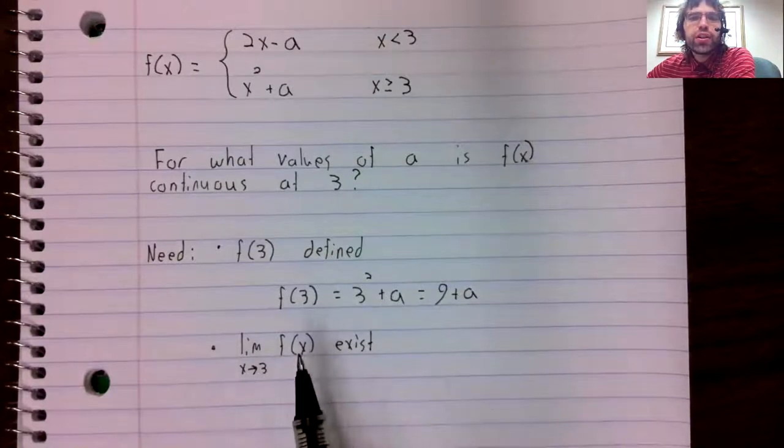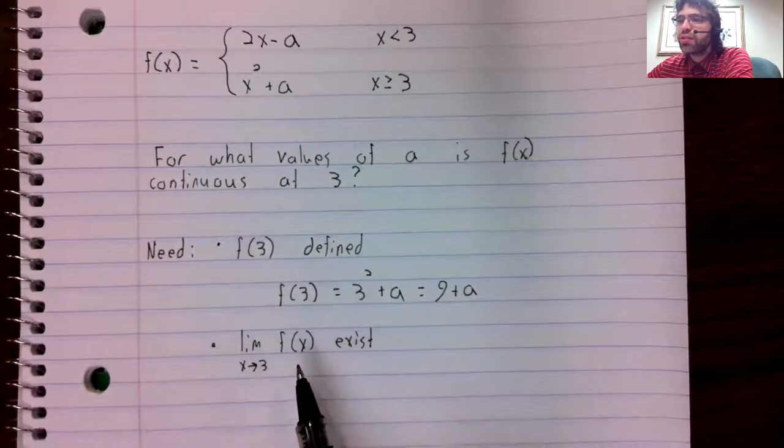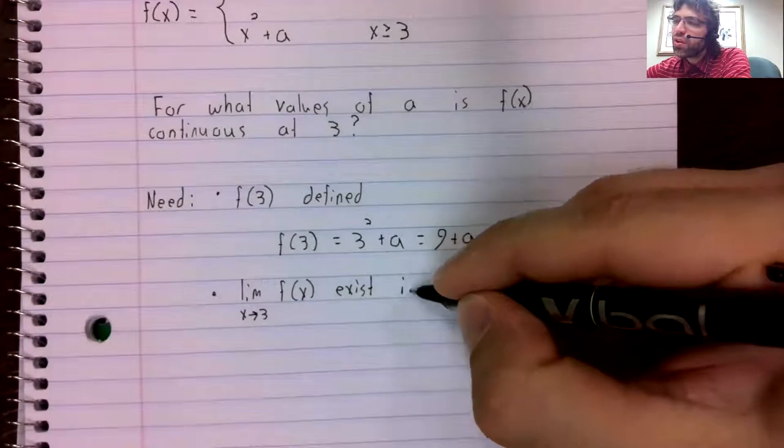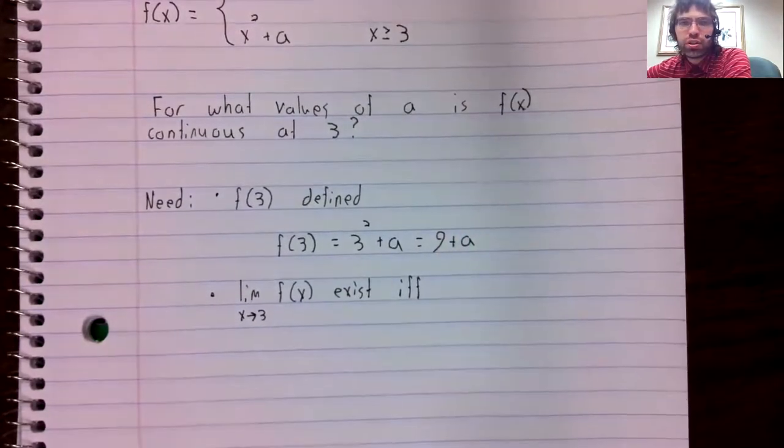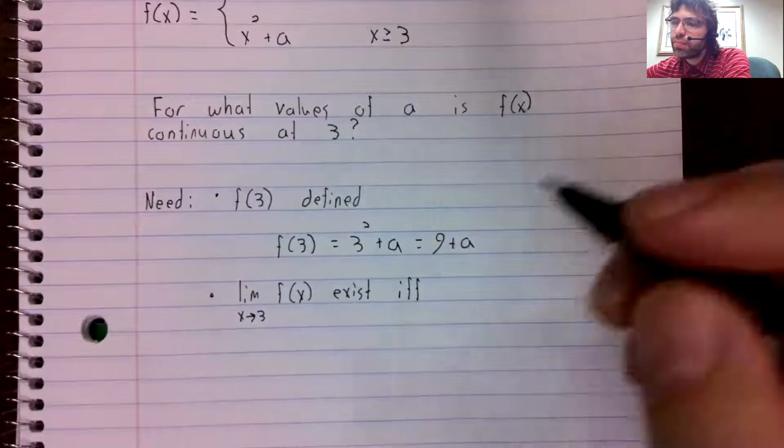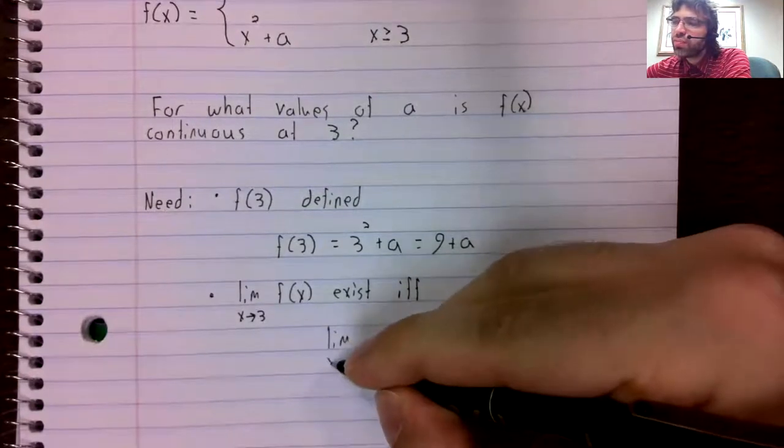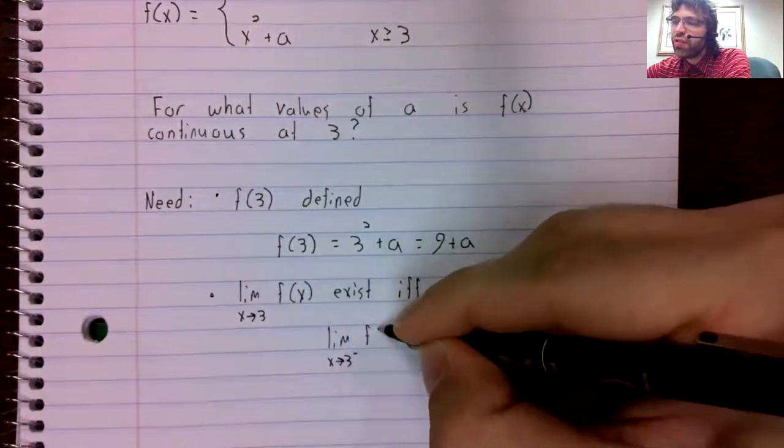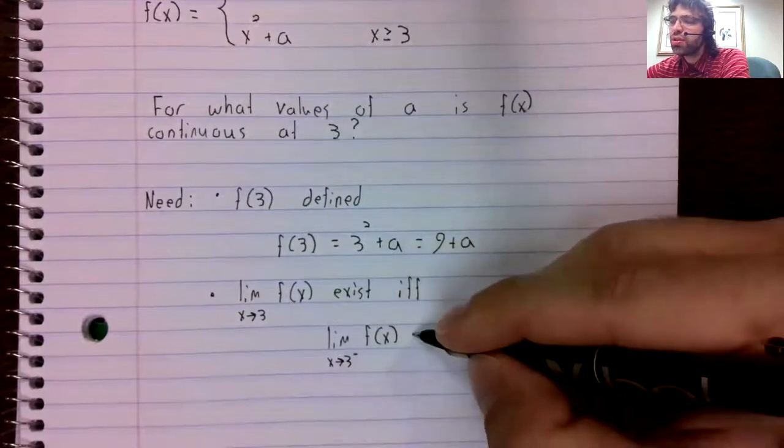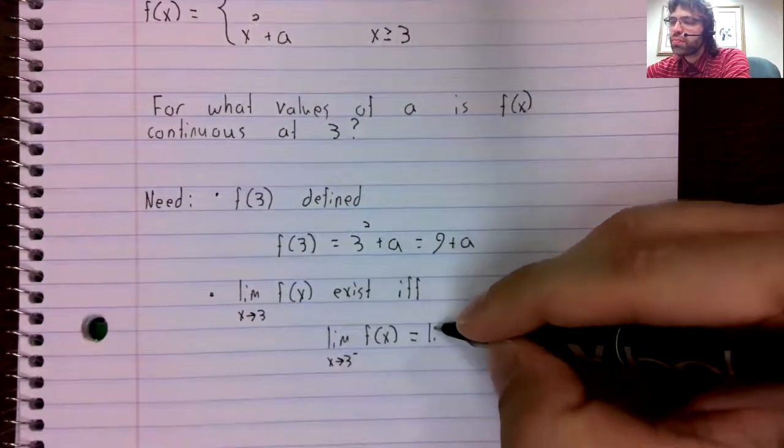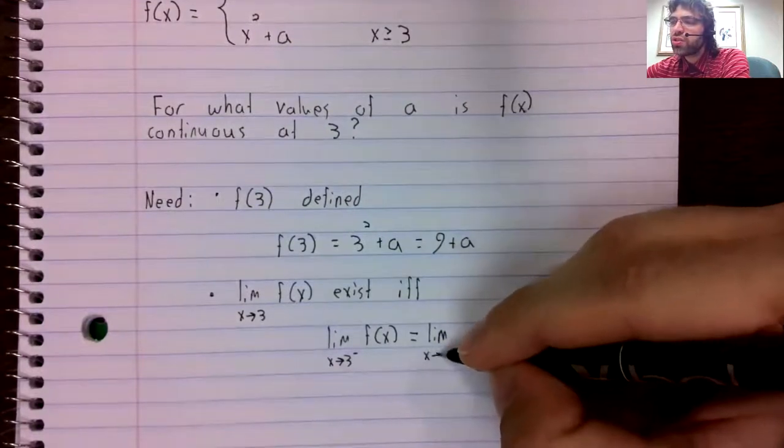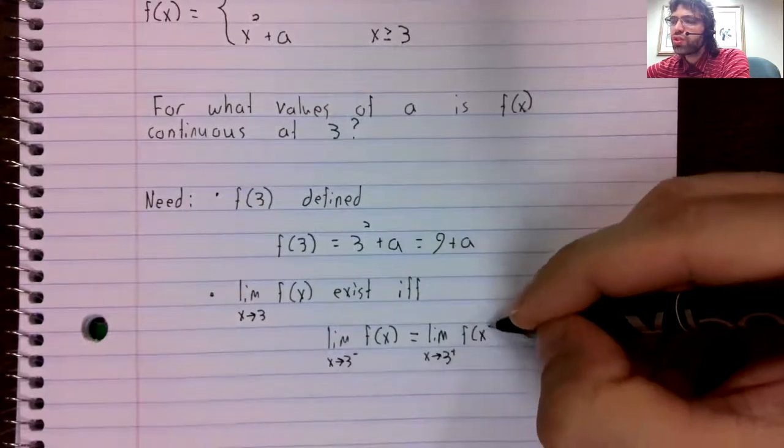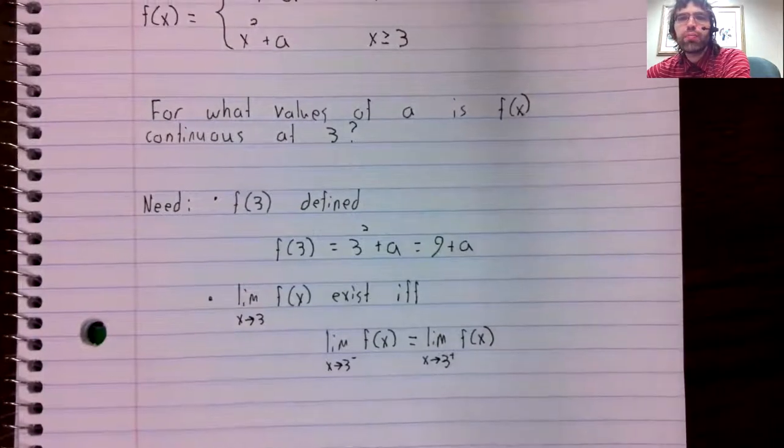To tackle this, we'll use one-sided limits. So this limit exists if and only if the limit as x approaches three from the left equals the limit as x approaches three from the right.